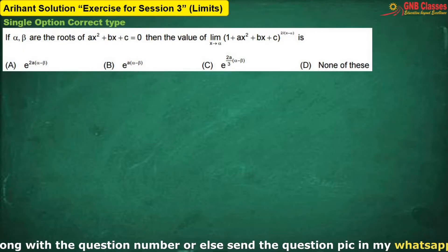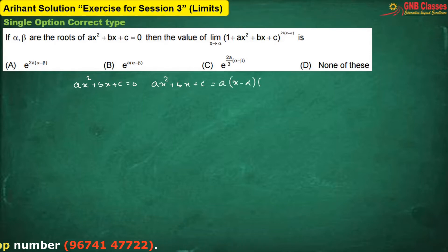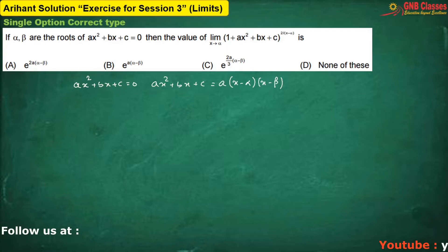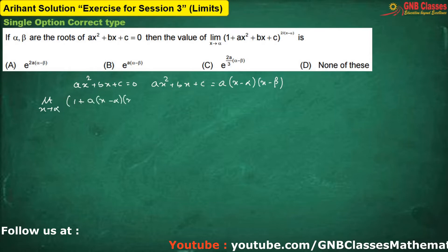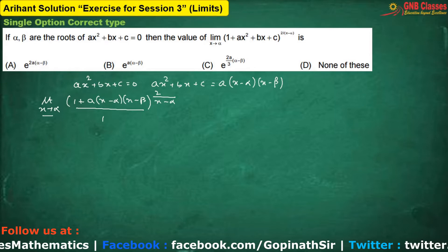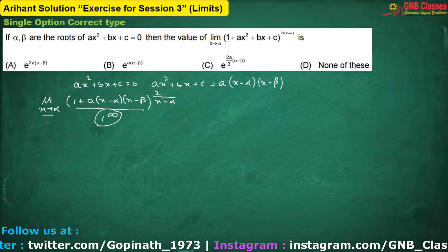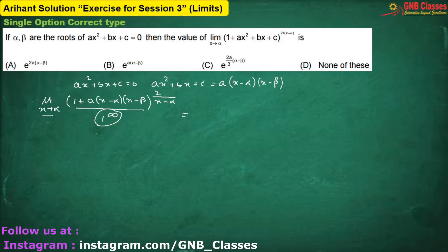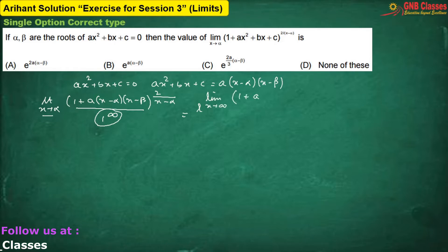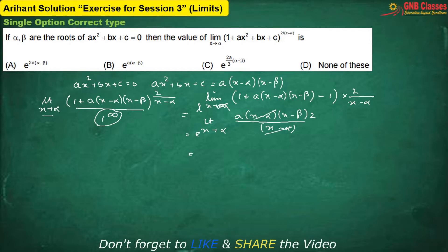Here, alpha and beta are the two roots of the equation, so I can write the expression as x minus alpha times x minus beta. The limit becomes x tends to alpha. If I put x equals to alpha, this part will become one and in the power we are going to get infinity. So it is one to the power infinity form. We are again applying the same formula discussed in the previous two sums — e to the power: limit x tends to alpha. The terms cancel and putting x equals to alpha, we get the answer. Hence option A is correct.